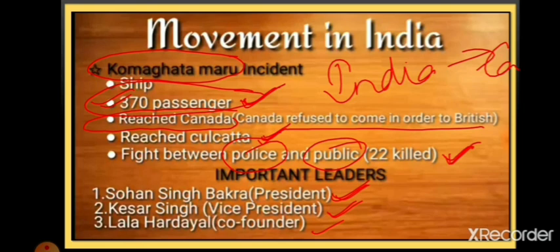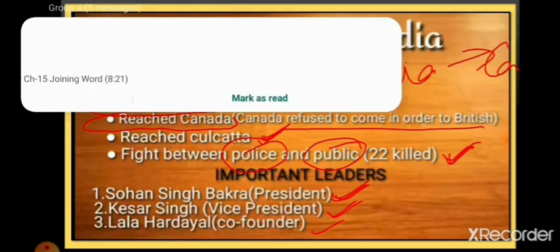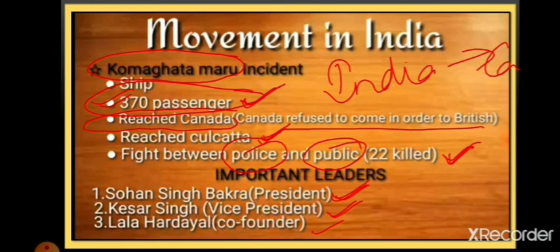So up to this part, I have explained the major events from the formation of the Gadar Party and the rise of revolutionaries. In the next part we will cover more topics: the Home Rule League in India, the Lucknow Pact, and we will begin the Gandhian era — welcoming Mahatma Gandhi back to India and his mass movement. Stay connected to the videos, watch the full video carefully, read your book, and ask queries in the Zoom classes. Thank you.